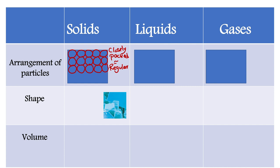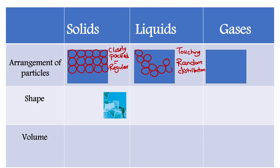Liquid particles are touching but arranged in a random distribution, not a regular pattern. When drawing liquid particles, we show that they are touching but randomly distributed. As for the gaseous state, the particles are very far apart from each other.